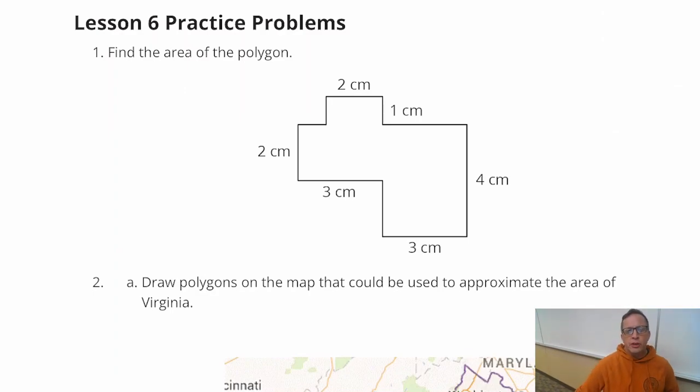All right, on to Lesson 6 Practice Problems. Number one, find the area. All right, so we've got this irregular shape. It's a composite figure made up of other shapes.